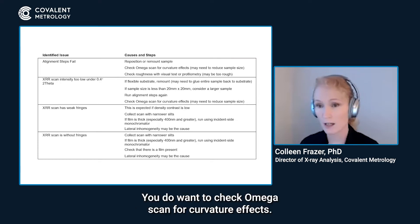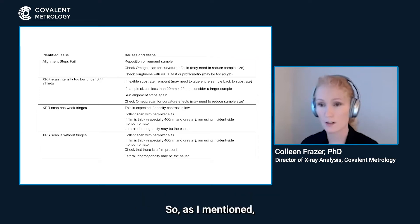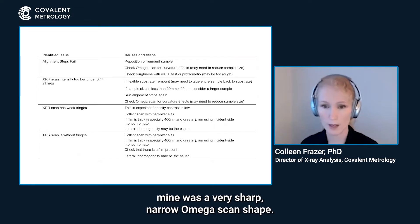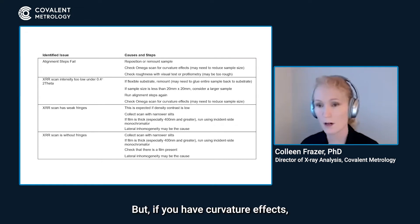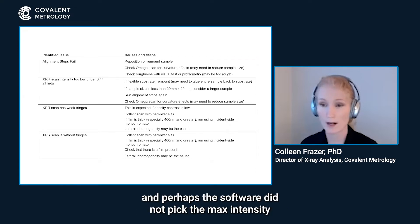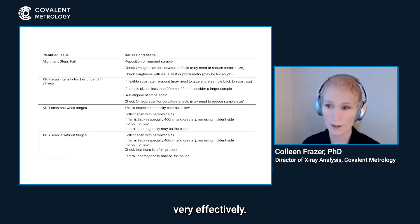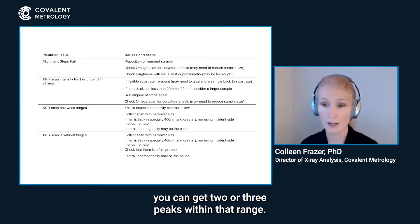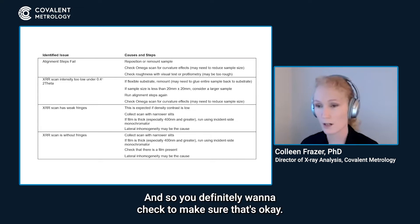You do want to check the omega scan for curvature effects. Especially in the direct beam measurements, mine was a very sharp, narrow omega scan shape. But if you have curvature effects, you might see a very wide peak and perhaps the software did not pick the max intensity very effectively. You can also get, for a regular curvature, two or three peaks within that range.